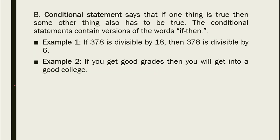Next, we have the conditional statement, which says that if one thing is true, then some other thing also has to be true. The conditional statement contains versions of the words 'if...then.' Example: 'If 378 is divisible by 18, then 378 is divisible by 6.' The first statement is true, and then the second statement has to be true because 378 is really divisible by 6. Another example: 'If you get good grades, then you will get into a good college.' That's a conditional statement.